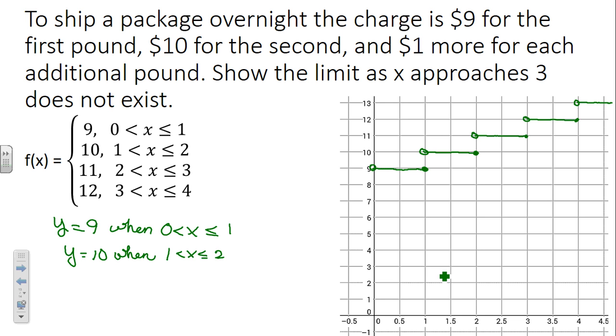So, now that we have our graph drawn, we can show that as we approach 3, we're approaching 3 for x from the left-hand side. We're approaching 11 for y. And as we approach 3 from the right-hand side, we're approaching 12 for y. Since these are two different L's, L is not the same. The limit does not exist at 3. Questions on that one?